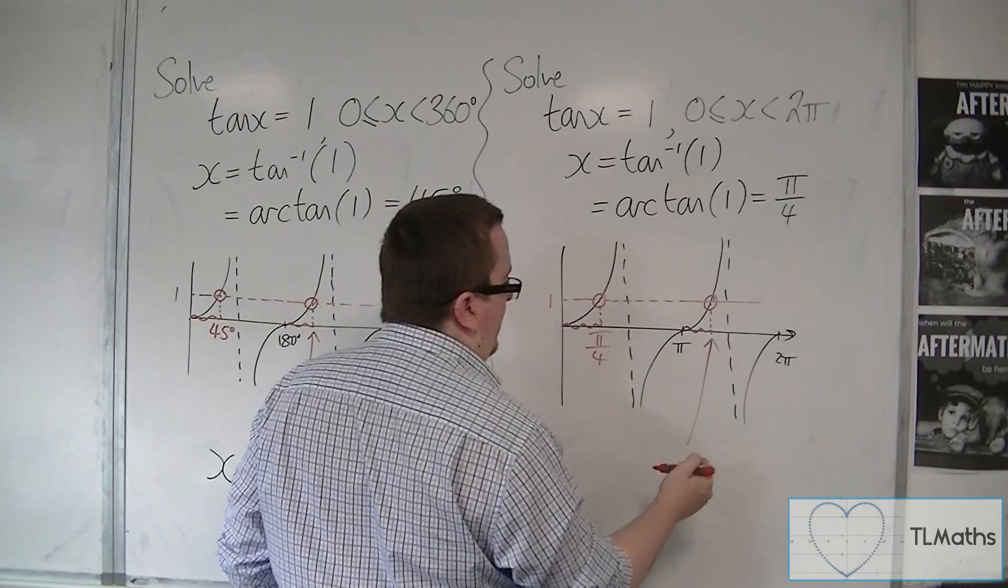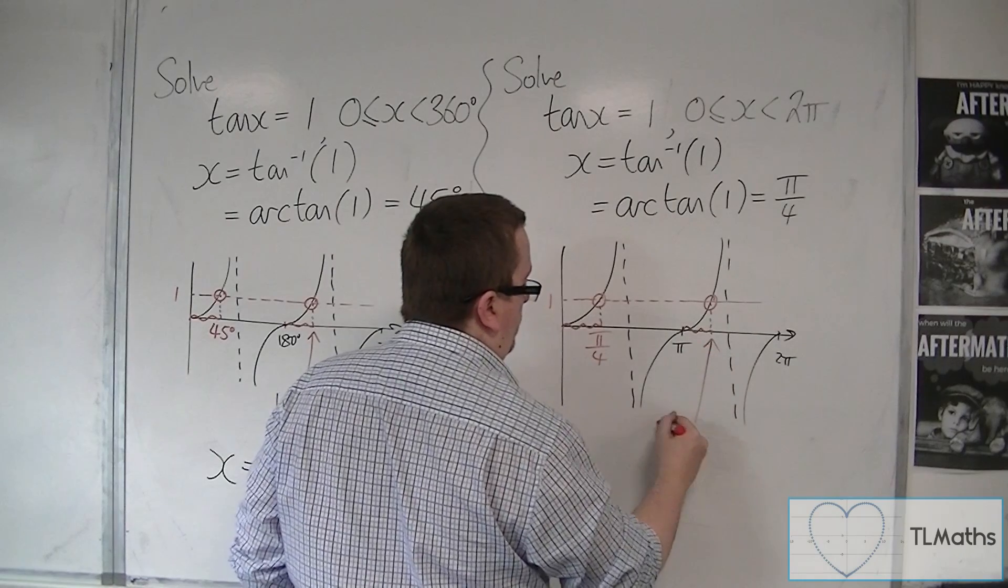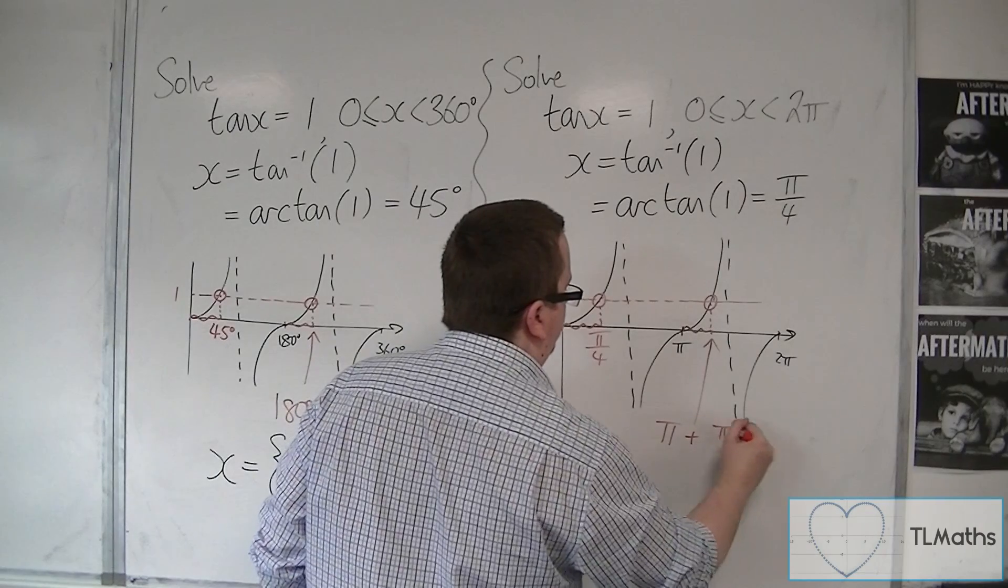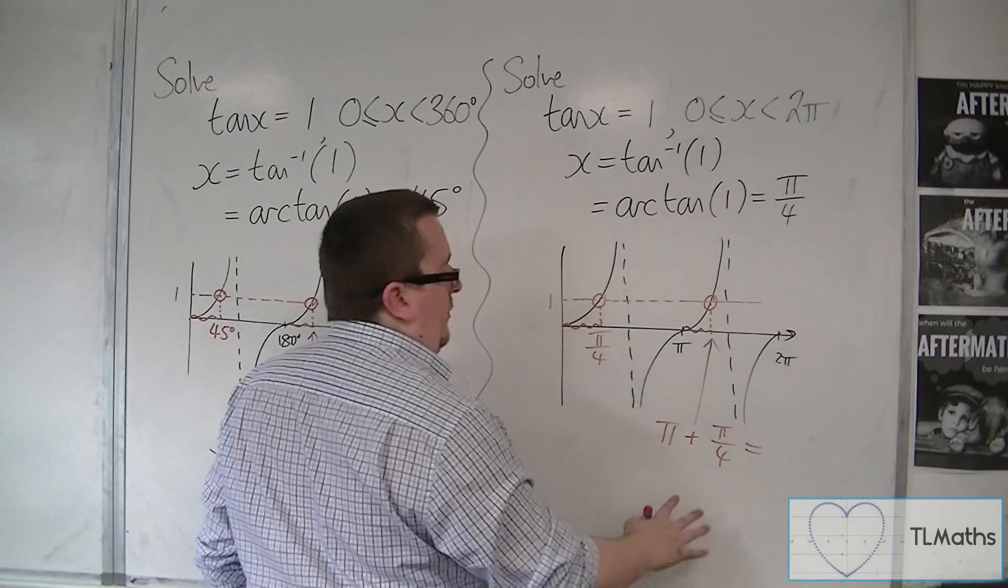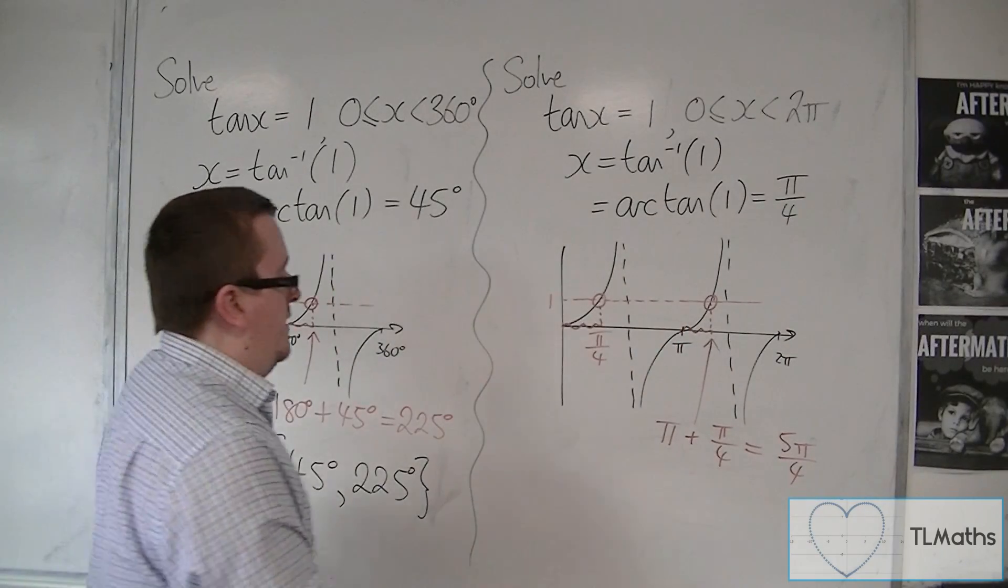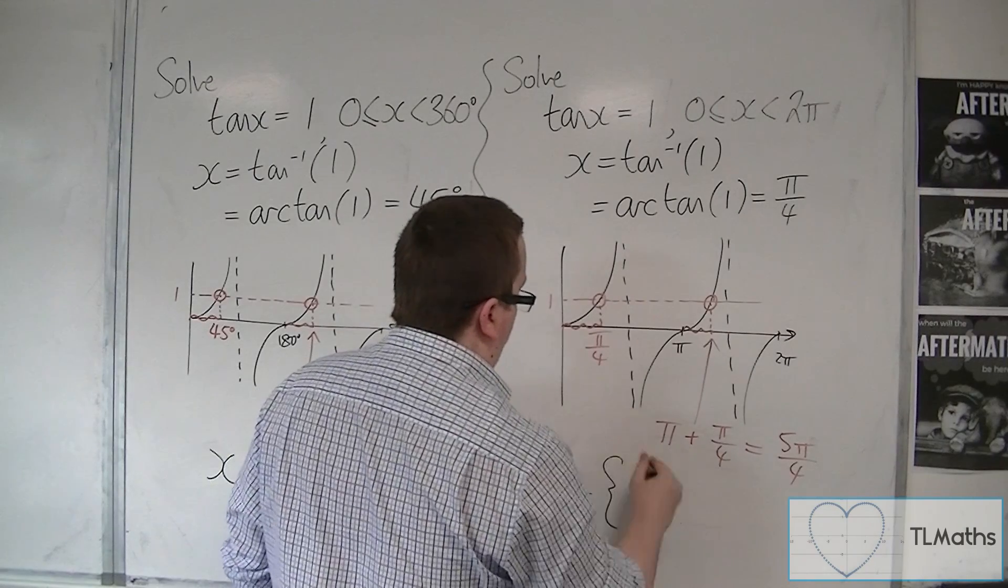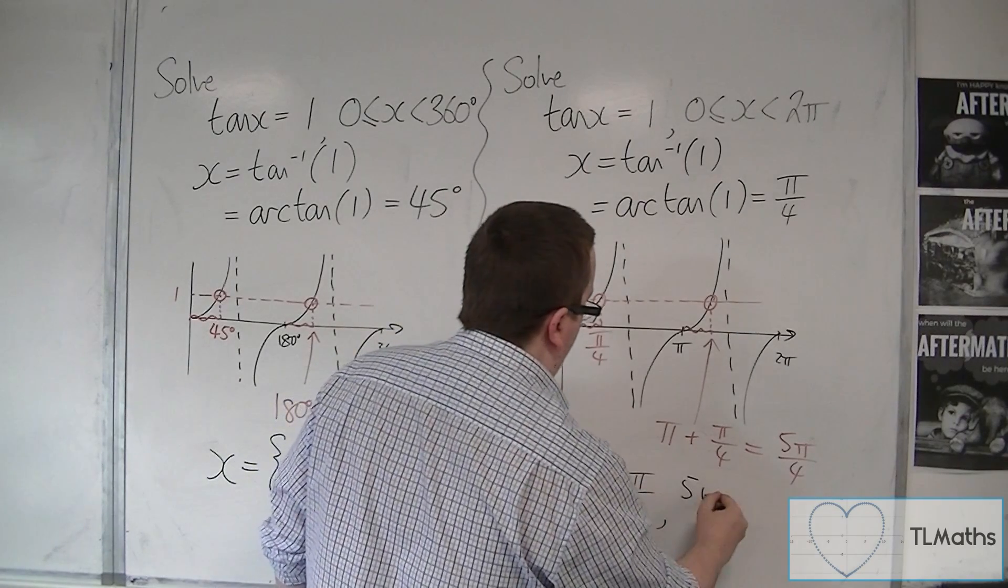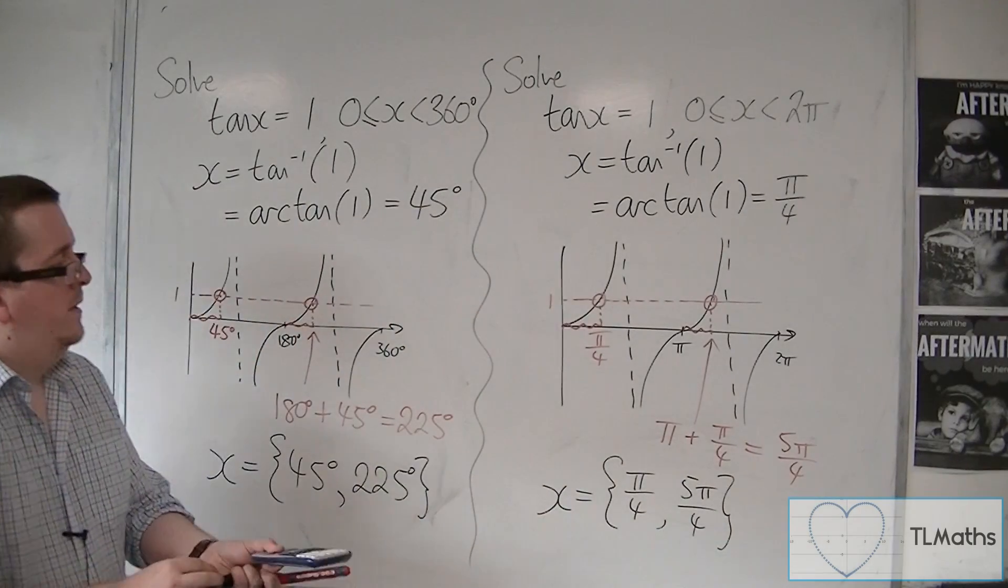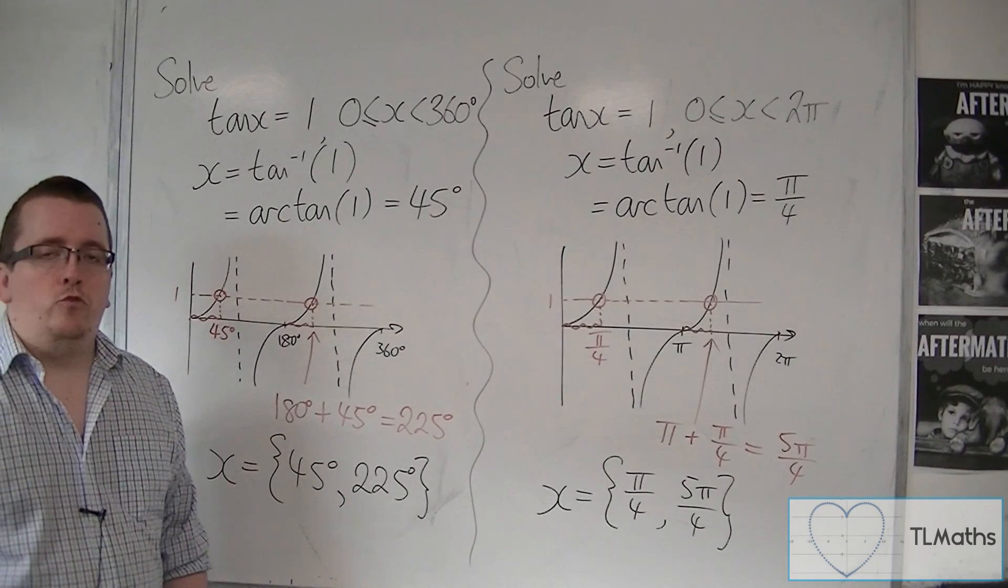So I can find that value by adding pi and pi over four together. So that's five pi over four. And so we can write our two solutions as pi over four and five pi over four. And that's how I can solve a basic tan equation in degrees and radians.